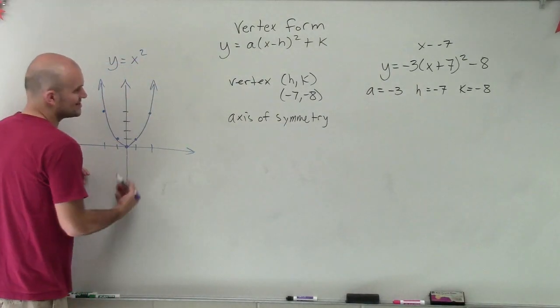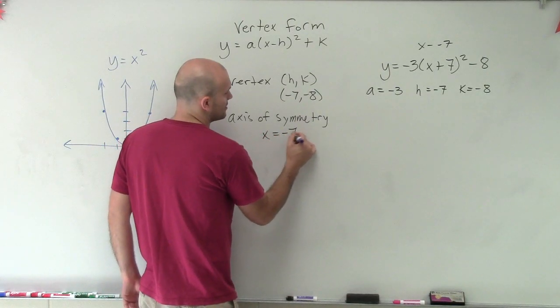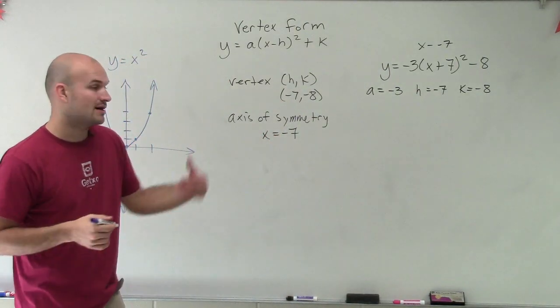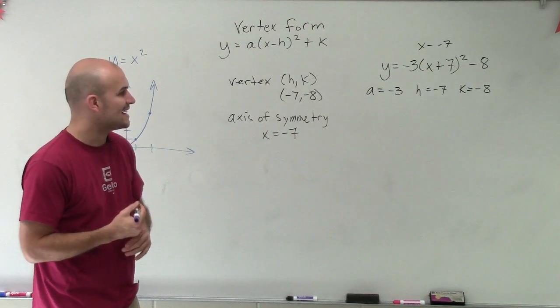And if it's originally at x equals 0, and I shift my graph seven units to the left, now I know my axis of symmetry is x equals negative 7. All right, because it was originally at 0, since I shifted over seven units to the left, now it's at x equals negative 7.